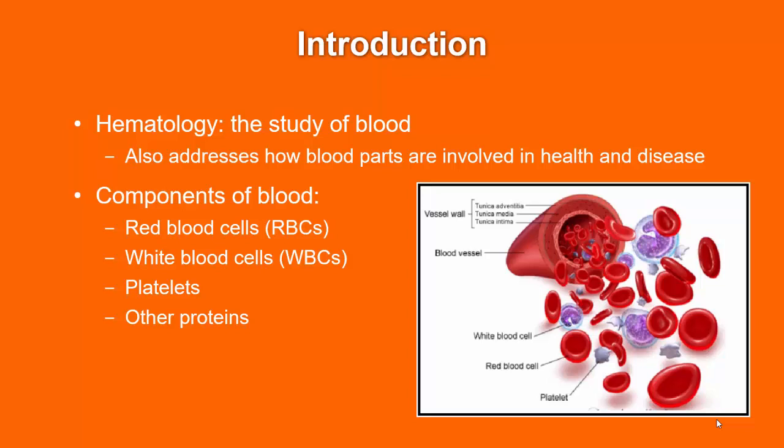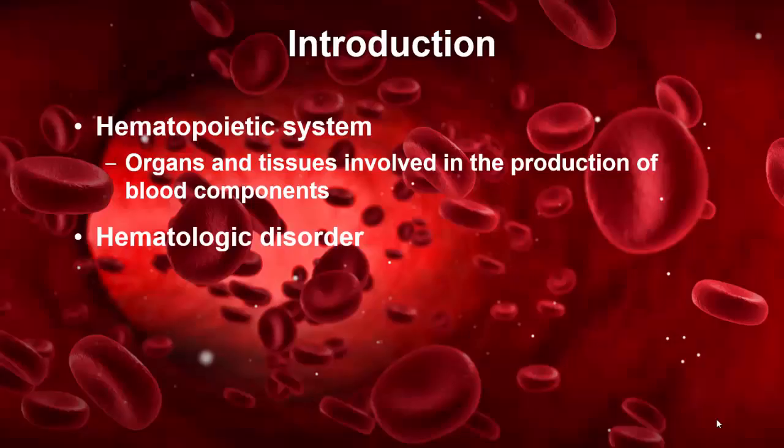Within this, you have what's called the hematopoietic system. The hematopoietic system includes organs and tissues involved in the production of blood components, primarily bone marrow, spleen, and lymph nodes.